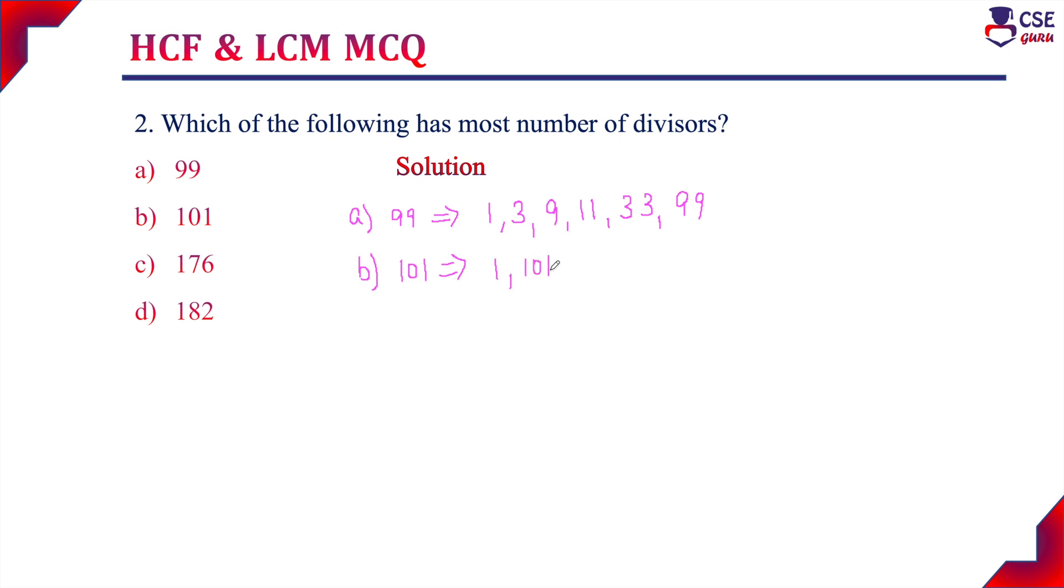Option C, 176, can be divided by 1, 2, 4, 8, 16, 22, 44, 88, and 176 itself. These are all the possible divisors for 176.